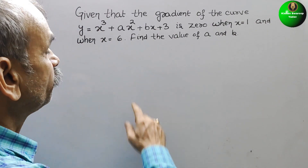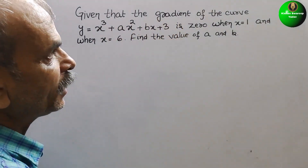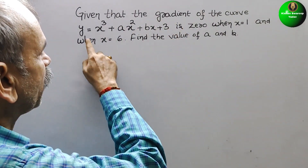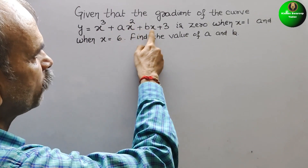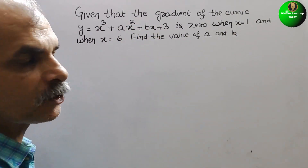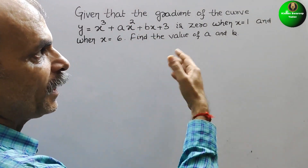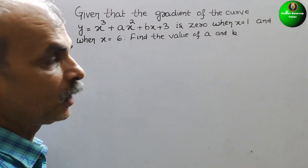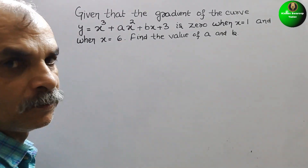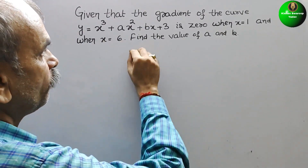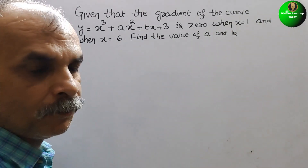Your question is: given that the gradient of the curve y equals x cubed plus ax squared plus bx plus 3 is 0, when x equals 1 and when x equals 6, find the value of a and b.